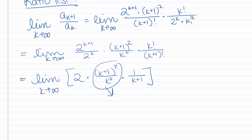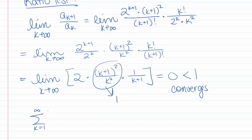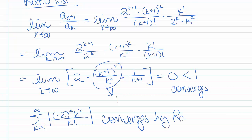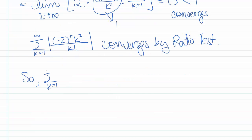Since k!/(k+1)! = 1/(k+1) goes to 0, the overall limit is 0. Since 0 is less than 1, the sum k goes from 0 to infinity of the absolute value of negative 2 to the k times k squared over k factorial converges by the ratio test. So the original series, sum k goes from 0 to infinity of negative 2 to the k times k squared over k factorial, converges absolutely, and thus converges.